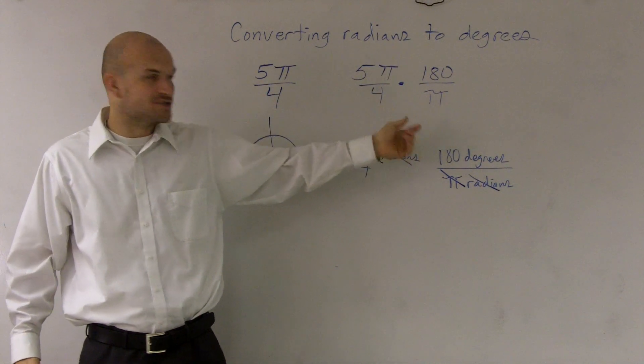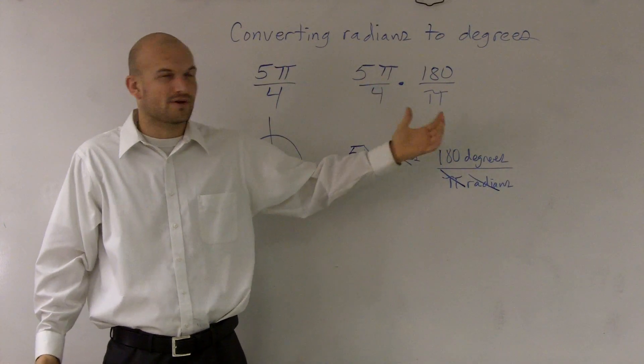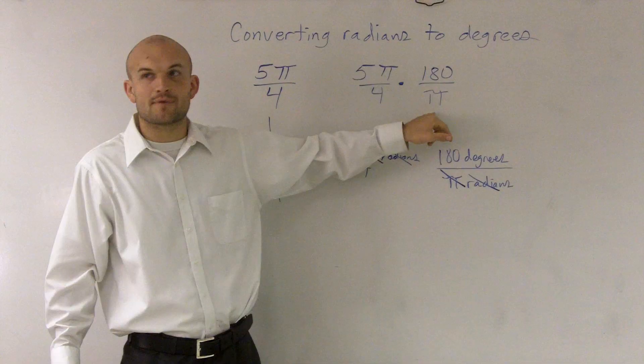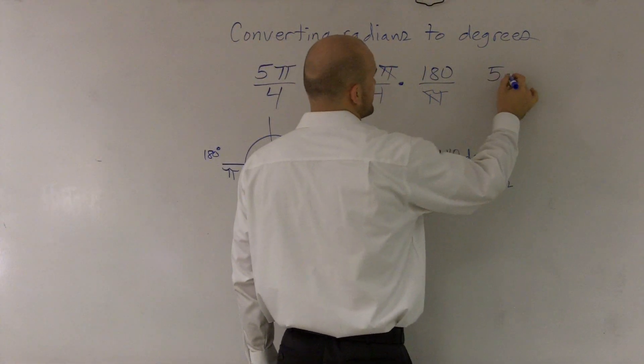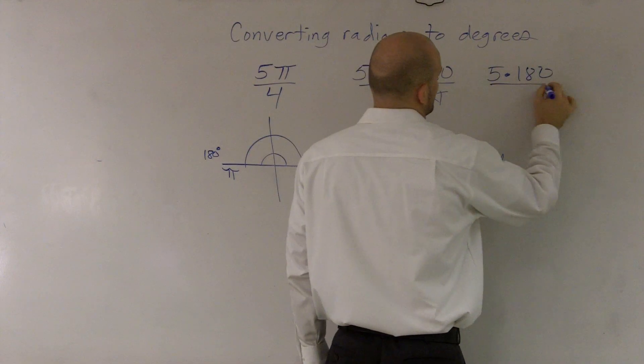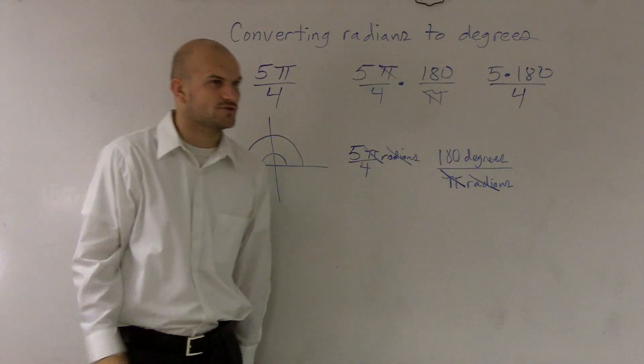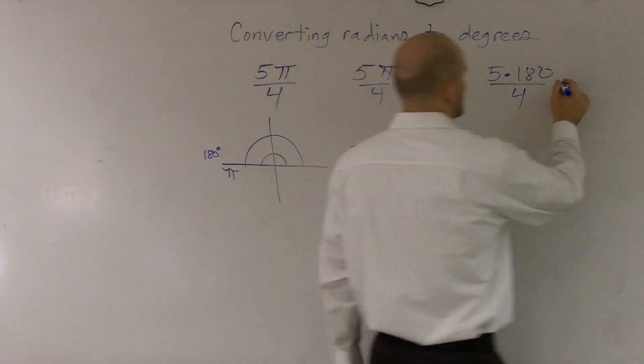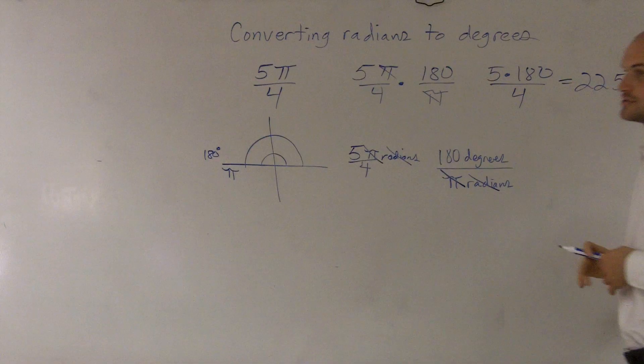Right? And remember, think about this. You want to get rid of π's, right? We want a degree. So we don't want a degree in terms of π. So we're going to have our π on the bottom. These cancel out. I'm left with 5 times 180 divided by 4. And I get 225. What's my answer? Very simple. So my answer is 225 degrees.